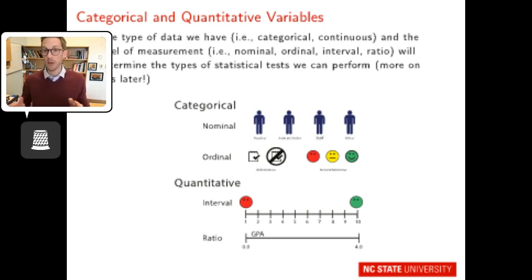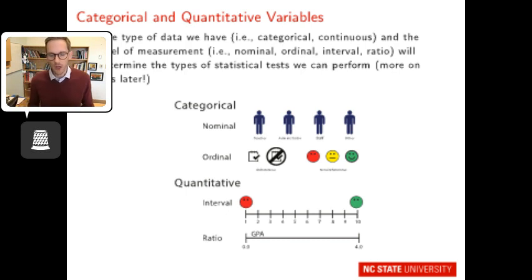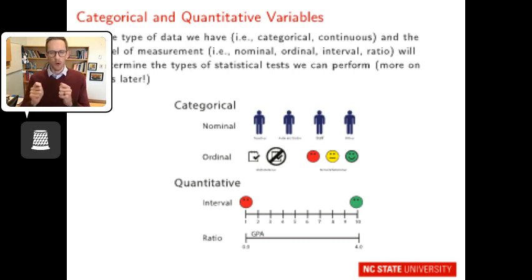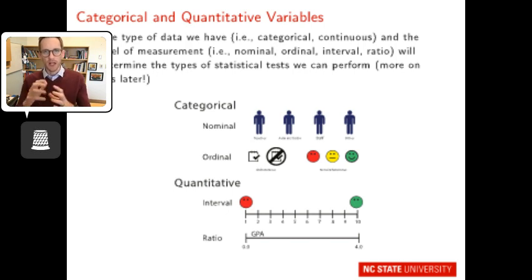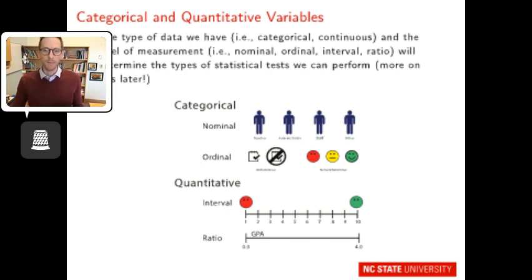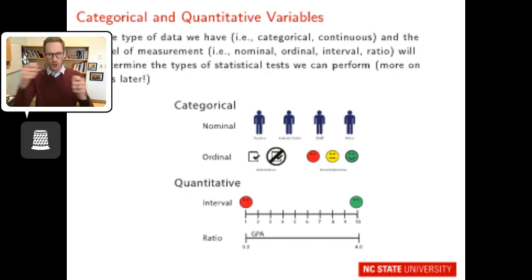It'll help determine the pictures you can make visually and the tables you can create. Under categorical, we have nominal level of measurement — think of it as 'in name only.' These are categories with no clear order, such as teachers, administrators, staff, and other, or race/ethnicity. You can't order them from one end to the other; the name itself gives you the level of measurement.